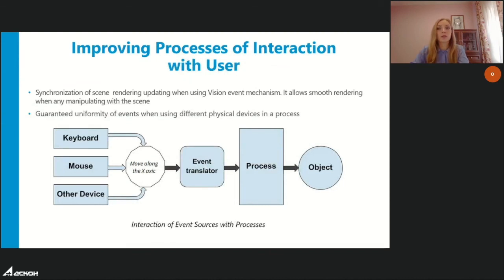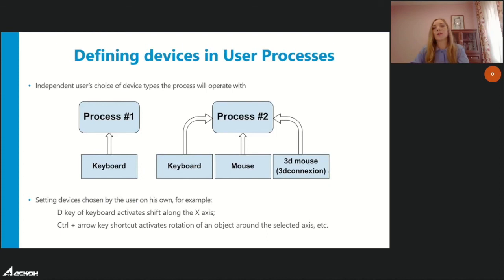Uniformity of events is now guaranteed when using various physical devices. A process can operate with two event sources — keyboard and mouse — translating homogeneous events such as 'move along the x-axis.' Users creating their own processes can now set event sources on a case-by-case basis and customize devices, for example setting specific keys for assigned devices to perform an action during the process.